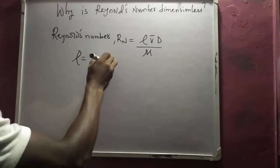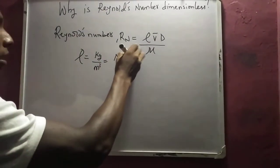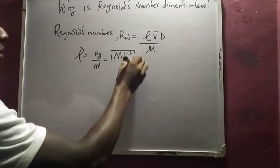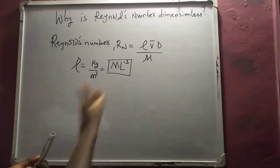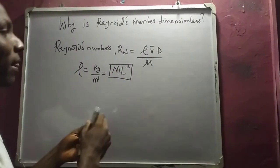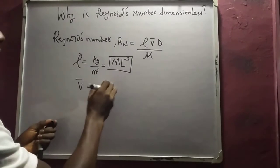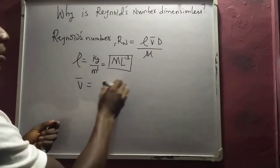...per meter cubed, which is mass over L³. And then for our mean velocity, meter per second, so this is length over time.